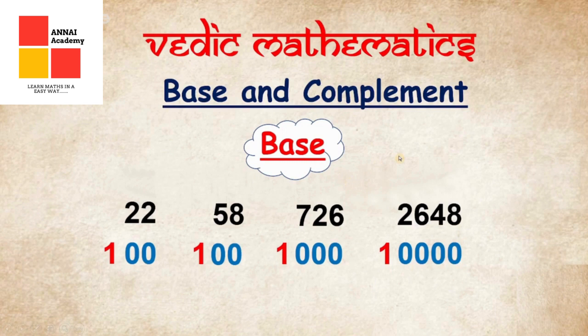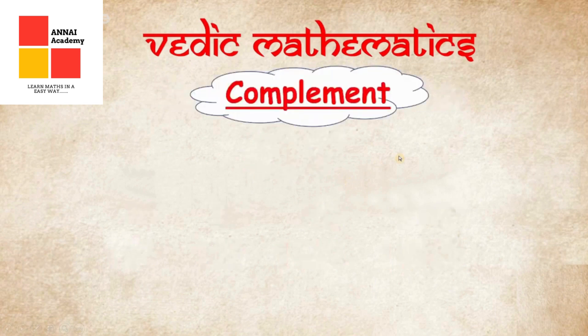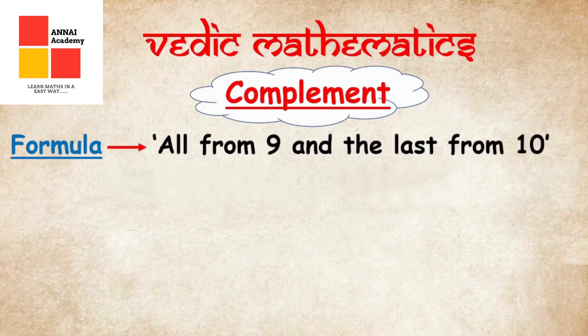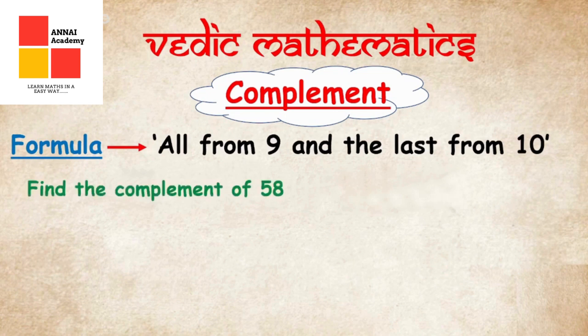Let's move ahead and know about complement. Vedic Maths tells us that every number has a complement. If we subtract any number from its base, we will get the complement of that number. But Vedic Maths also gives a very simple formula: All from 9 and last from 10. Now let's see how we can implement this formula.